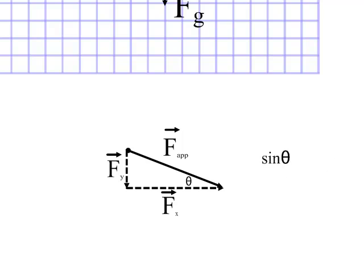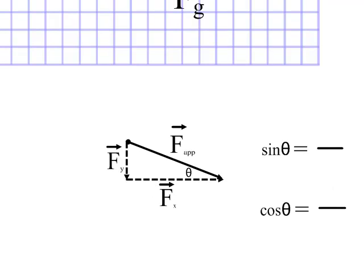So, if I remember that sine theta is equal to the opposite side divided by the hypotenuse, then I can find my y component just by rearranging that equation.